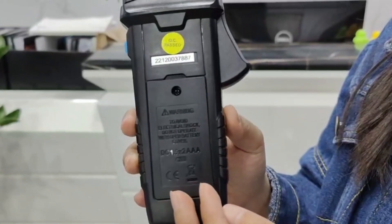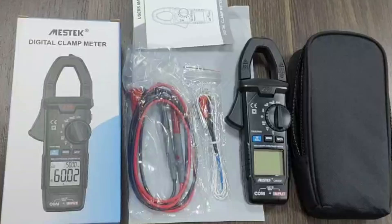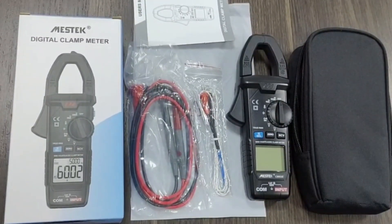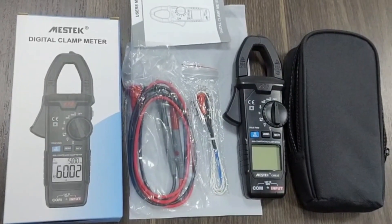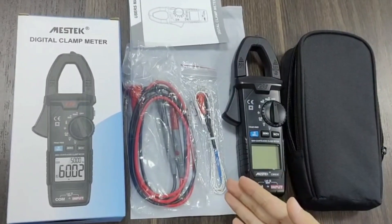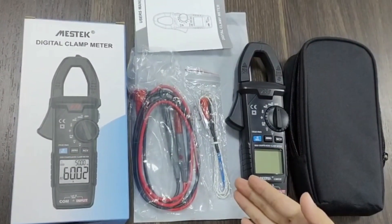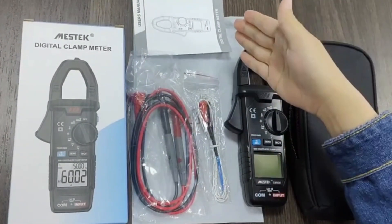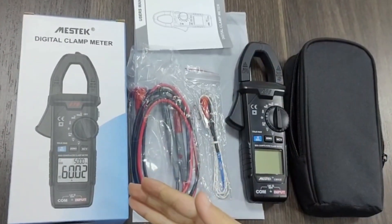Here is the battery compartment. The CMH3E accessories include a carrying case, the clamp meter, K-type probe to test temperature, test probes, user manual, and gift box.